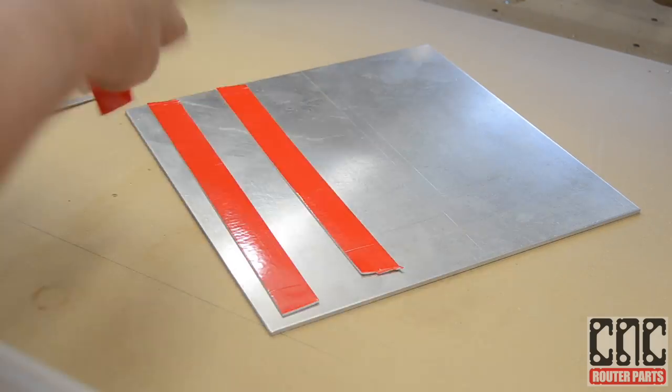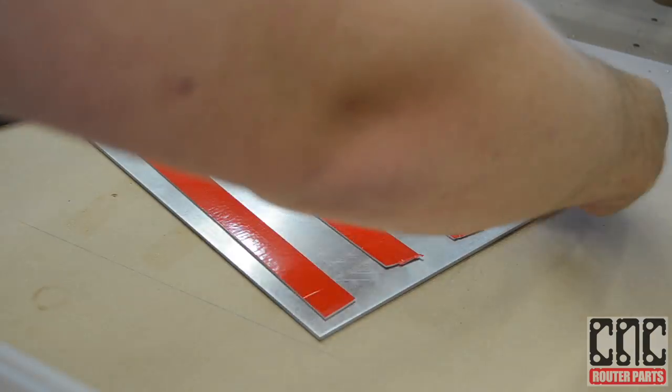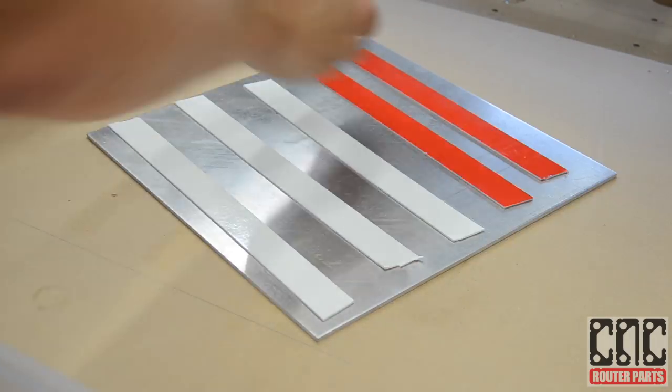This is a very limited run so I'll simply use some double-sided foam tape to secure the plate and retain the completed parts instead of creating a custom jig.